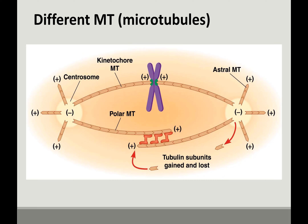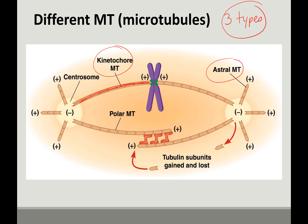There are three types of microtubules that are very important in cell division. The kinetochore microtubules go from the centrosome and connect to the kinetochore, so they are physically connecting to the chromatids. The astral microtubules are hooking the centrosome to the plasma membrane, which is going to be important when we pull these chromatids apart.